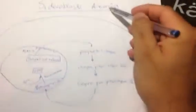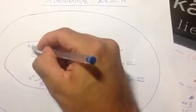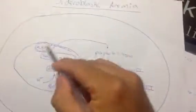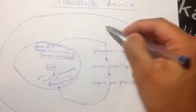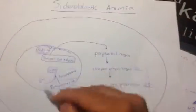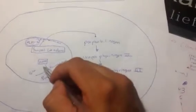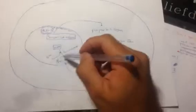Now sideroblastic anemia is caused by a defect in this enzyme, in ALAS-2 enzyme. Because this enzyme ALAS-2 is bad, this product doesn't get made, this whole thing doesn't get made, protoporphyrin doesn't get made. But since iron has no problem going inside of the mitochondria, it just gets trapped in there because it cannot come out. It cannot combine with protoporphyrin, therefore it cannot make heme, and iron gets trapped inside of the mitochondrion.